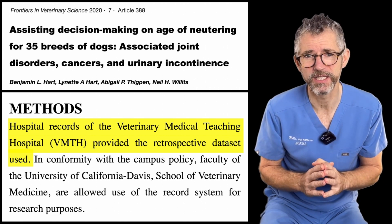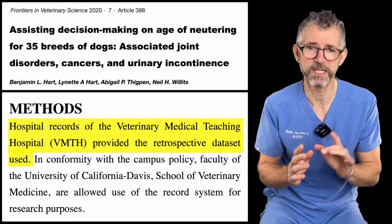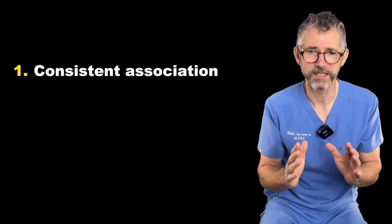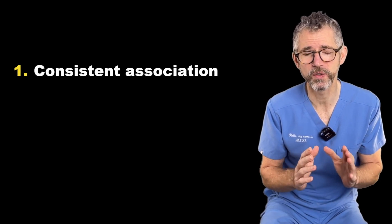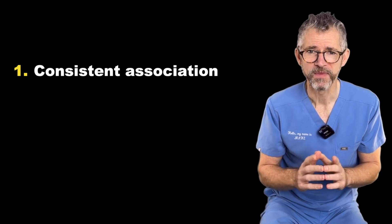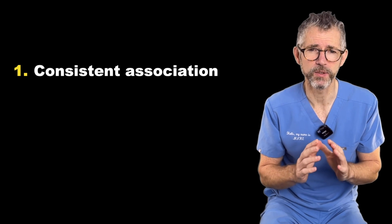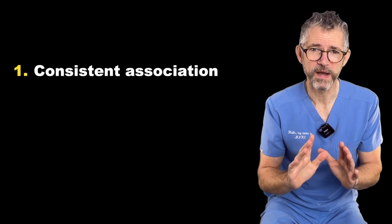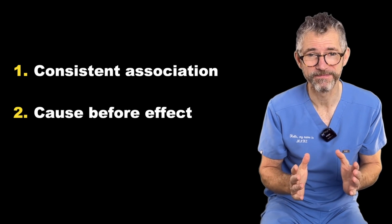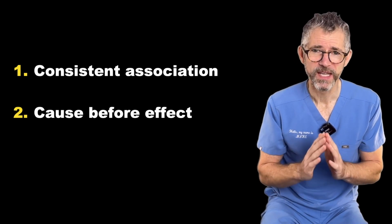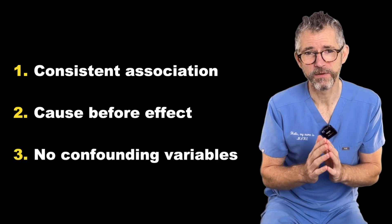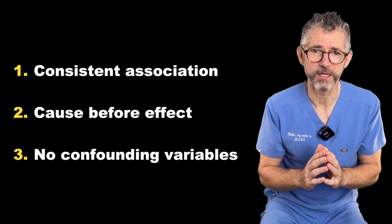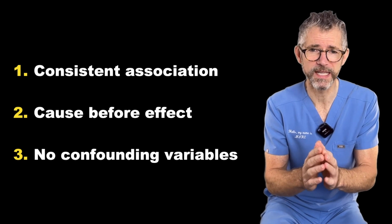Proving a cause-and-effect relationship requires a study design which satisfies three conditions. Condition one: there must be a clear and consistent association between X, the proposed cause, and Y, the supposed effect — called a statistical relationship or correlation. Condition two: X must come before Y. Condition three: Y mustn't be influenced by uncontrolled factors other than X. These confounding variables include diet, lifestyle, and most importantly, owner attitudes.